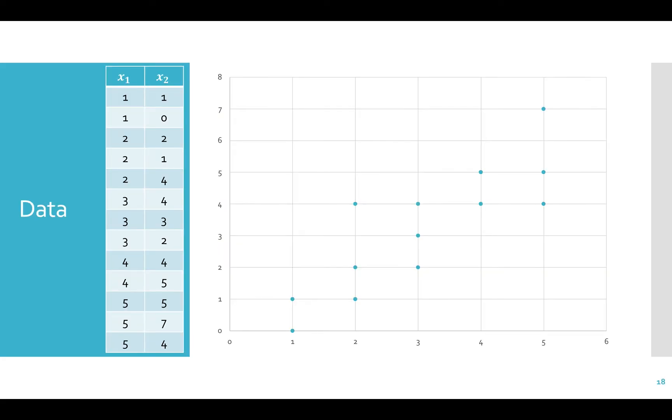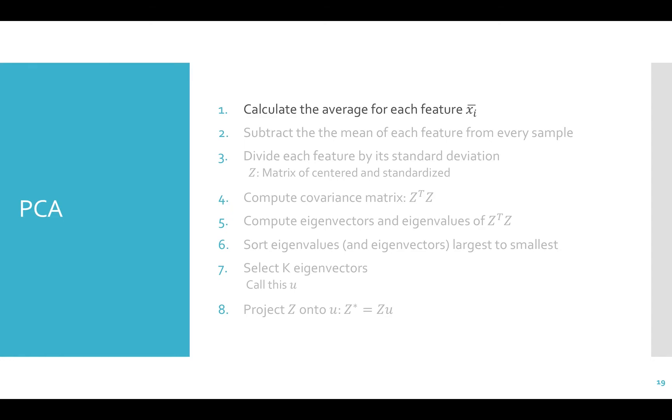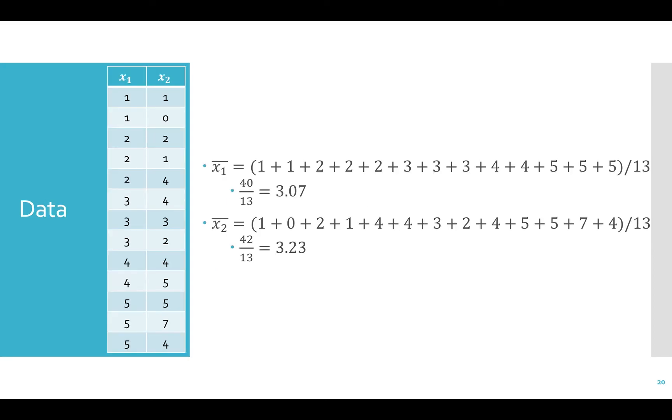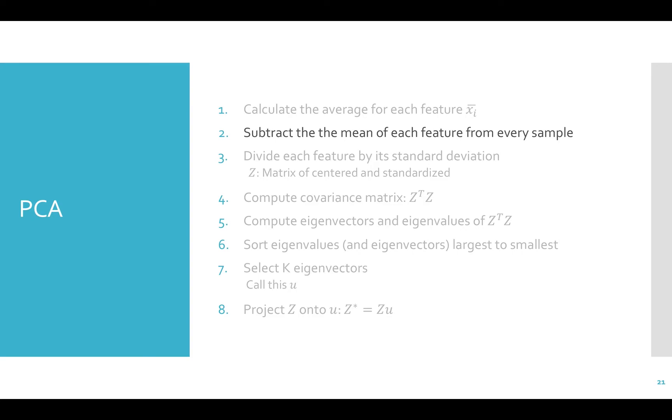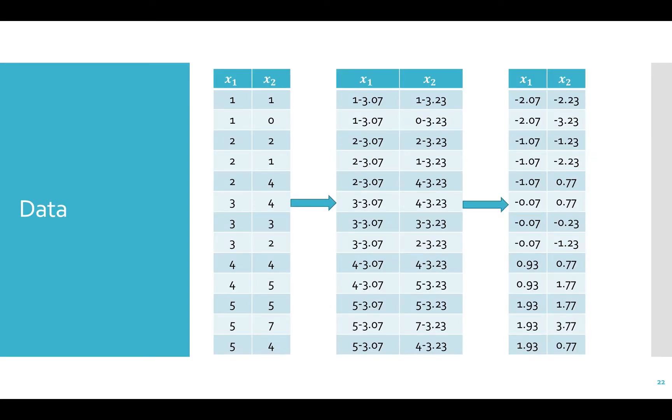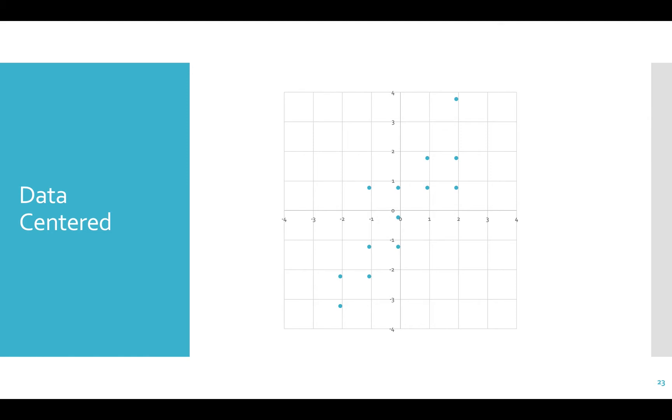Let's go through an example to see that it isn't all bad. We have some two-dimensional data. This just means that we have two features, x1 and x2. I have the data in a table here on the left and plotted on the right. First, we need to calculate the average for each feature, and we get the average for x1 is 3.07 and the average for x2 is 3.23. Now we need to subtract the mean of each feature from every sample, and we get this new data on the right. This data is referred to as centered, because if we were to calculate the mean of both features, now they would both be zero. So we shifted the data to the origin. So it's centered, and it looks like this.